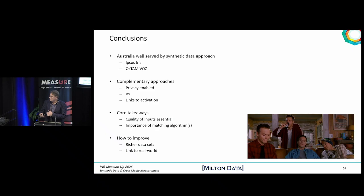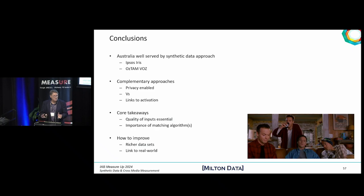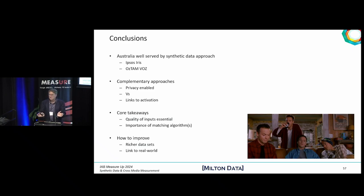To conclude with a couple of key observations: we are already well served by leading edge data services with both Ipsos IRIS and OzTam in the marketplace now. Both offer complementary approaches — there's not a case of one being better than the other; both serve valid roles depending on the application. But the key for us is that the quality of the inputs still needs to be considered. We can't just take convenient samples, particularly in the role of understanding the nature of cross-platform usage and the extent to which that controls the measures used for determining advertising effectiveness.